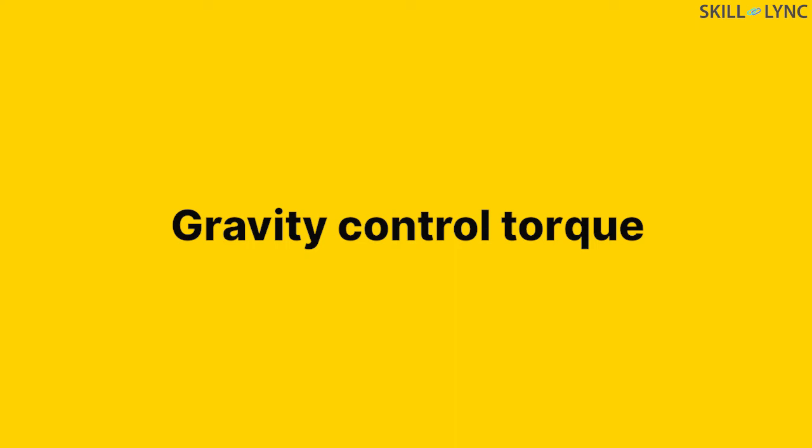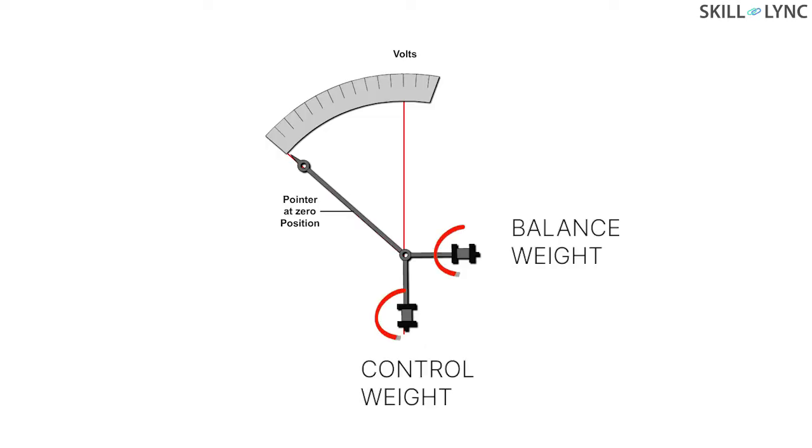Next, we have the gravity control torque. In this, the pointer is suspended with a small weight termed the control weight. Due to gravitational pull, a control torque opposite to the deflection torque is produced whenever the pointer moves from its initial position. On resolving the components, we get that Tc is directly proportional to sin theta,